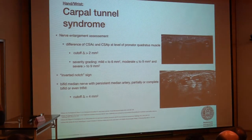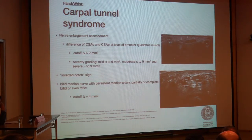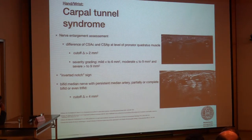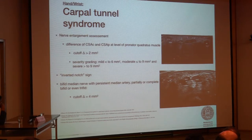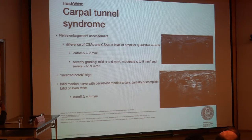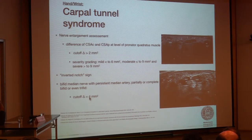There is another anatomical variation where adjacent to the nerve is the median artery. In these cases, we take both cross-sectional area measurements and add them together; the cutoff in this situation is 4 mm².